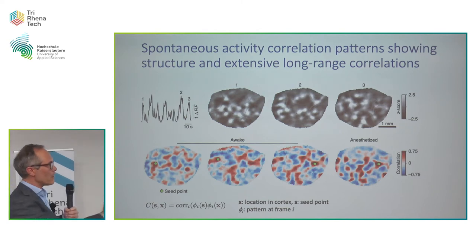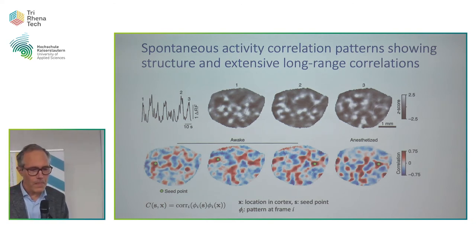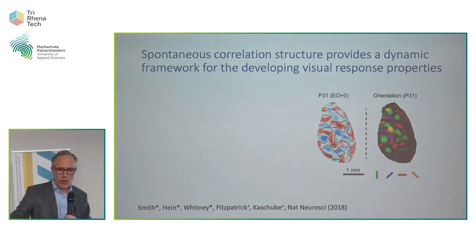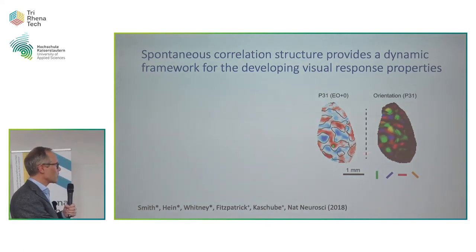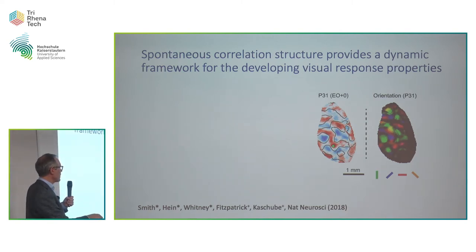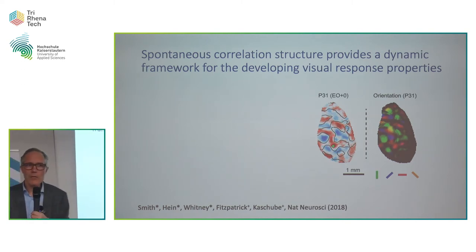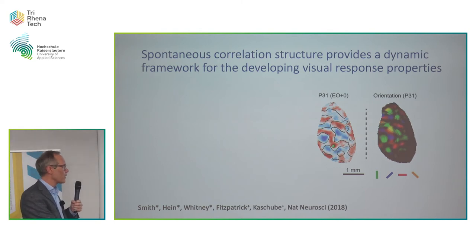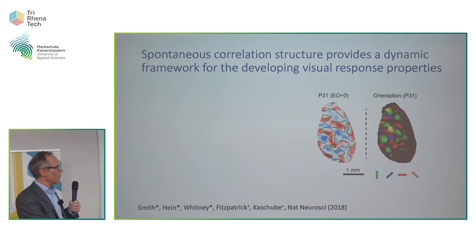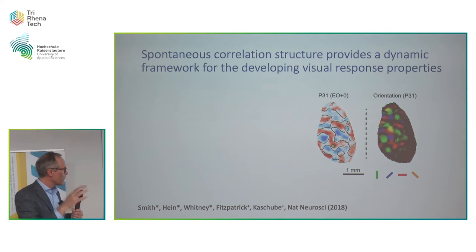The concrete question is what does this structure have to do with the representations of visual contours that are about to form. At the moment of eye-opening at P30, we can directly compare the two. The correlation structure of spontaneous activity and the layout of how edges are encoded in the visual cortex: when we draw contour lines defining different orientation domains and superimpose them on the correlation structure, they match quite nicely. Spontaneous activity without any stimulation matches quite well the structure of visual angle encoding.